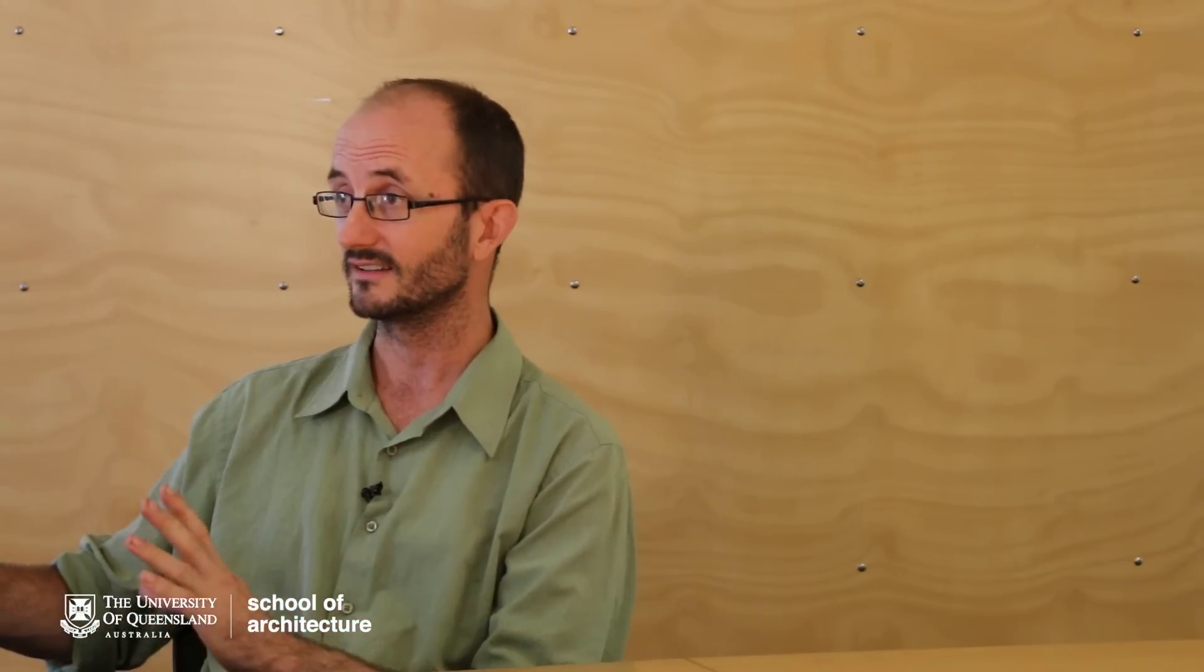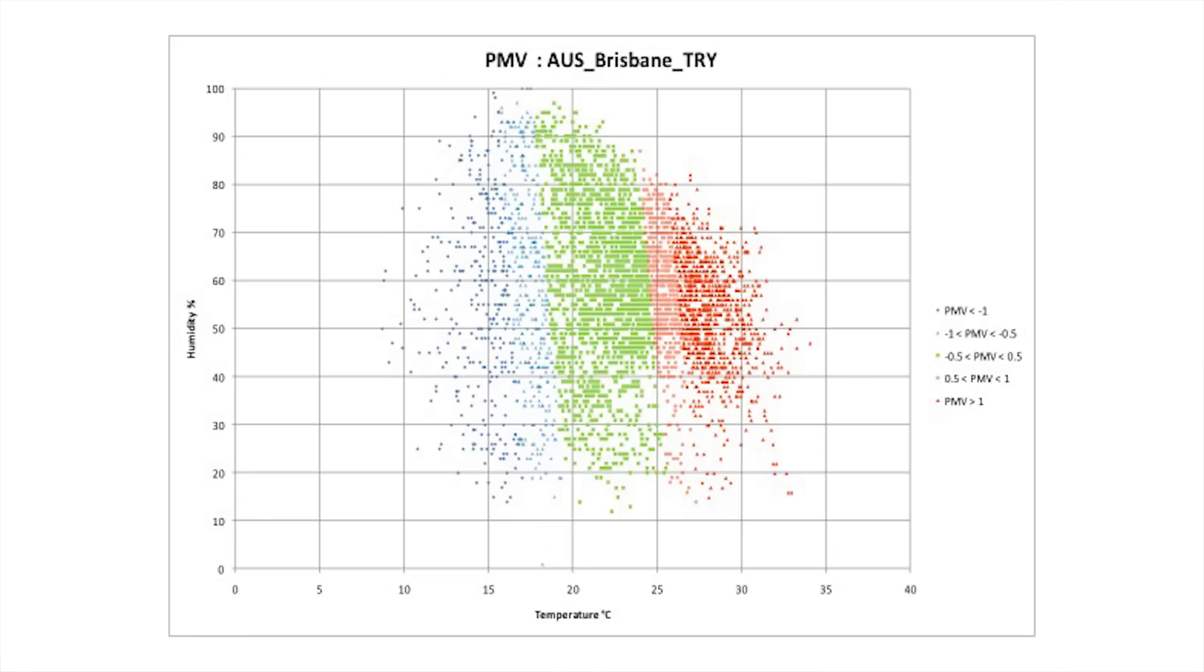In the last slide of the last section, we saw this very complicated psychometric chart, which is super confusing and we don't really need that level of complexity. So we're going to look at this one, which is simply on the bottom axis we've got temperature, so on the right-hand side it's hotter, and on the vertical axis we've got humidity. So we end up with four quadrants. The top right is hot and humid, the bottom right is hot but dry, and on the left-hand side down the bottom it's dry and cold, and the top left is humid and cold.